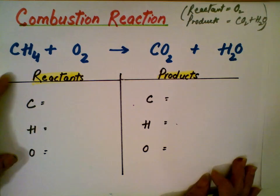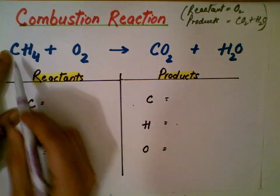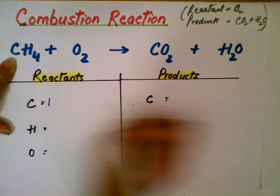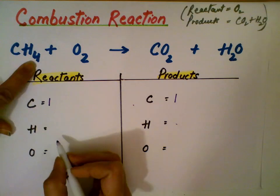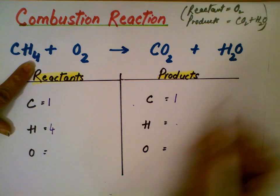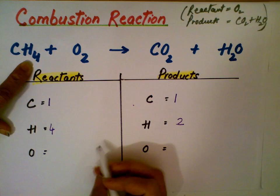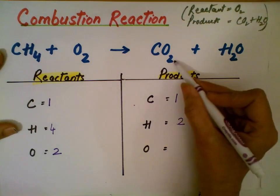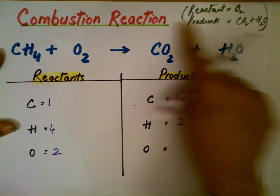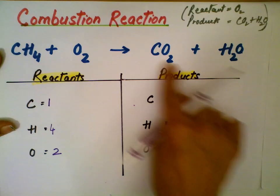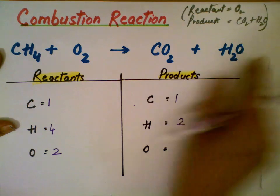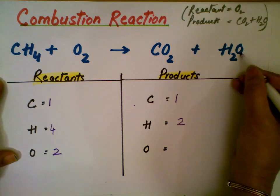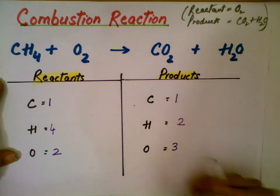That's our job — to make them equal. So carbon here is 1, and on this side carbon is 1. Hydrogen is 4 here, and hydrogen this side is 2 — so 2 atoms of hydrogen. Here I see 2 atoms of oxygen, and here you have 2 and then 1. Remember, we are looking at the entire side, not just one substance. So you have 2 plus 1, which is 3 atoms of oxygen.